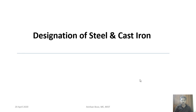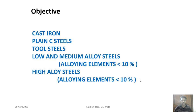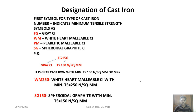In this lecture we are going to see how steel and cast iron are designated. The objective is to initially cover cast iron designation, then plain carbon steel, tool steels, low and medium alloy steels, and finally how alloy steels are designated. We will study only those portions where the designation is done according to Indian standards.